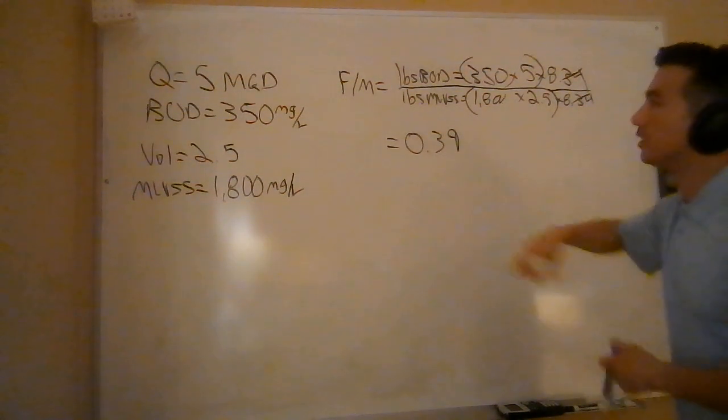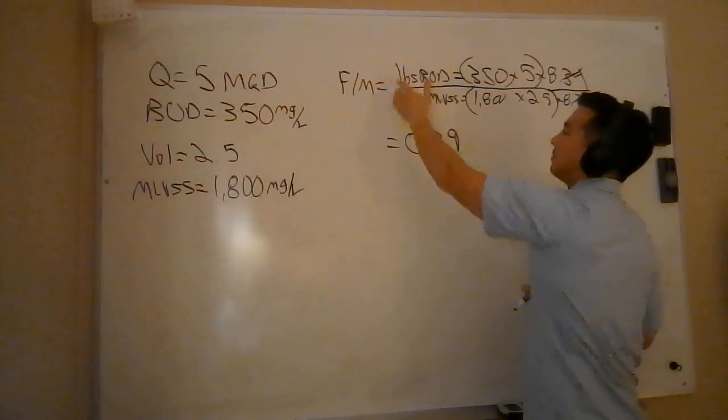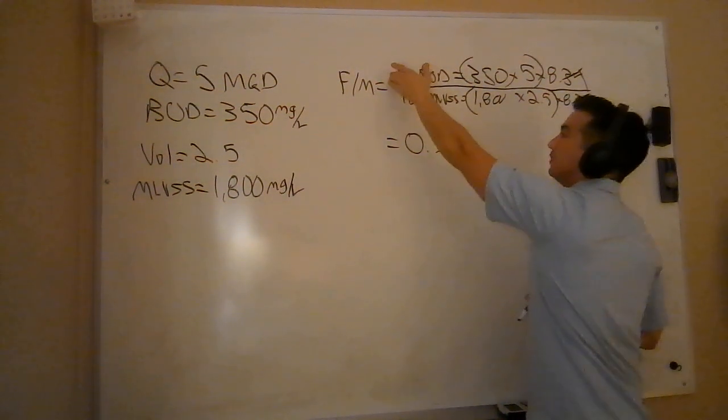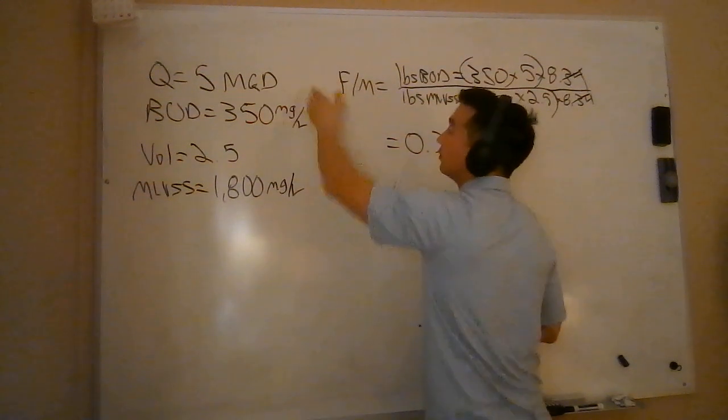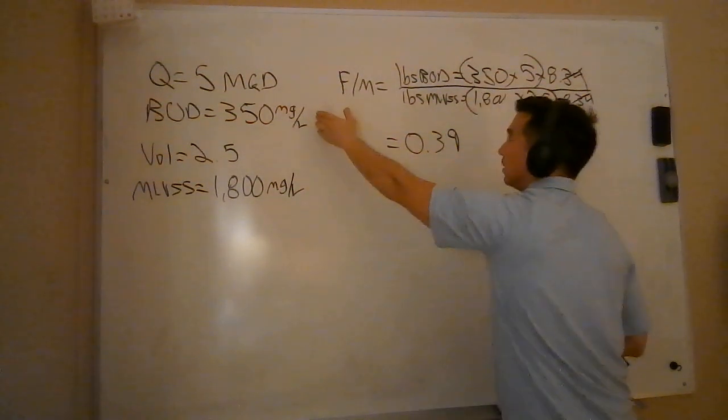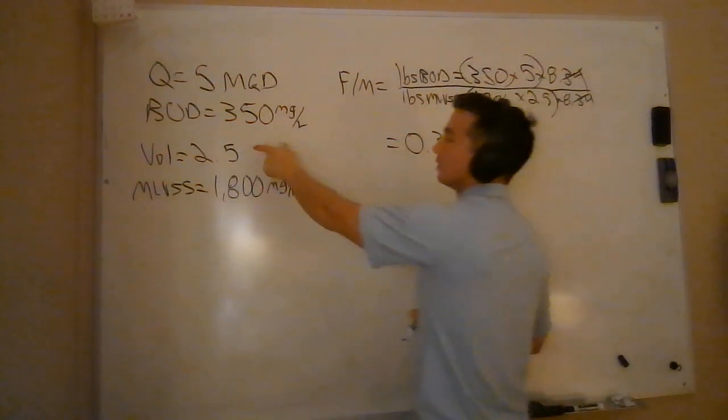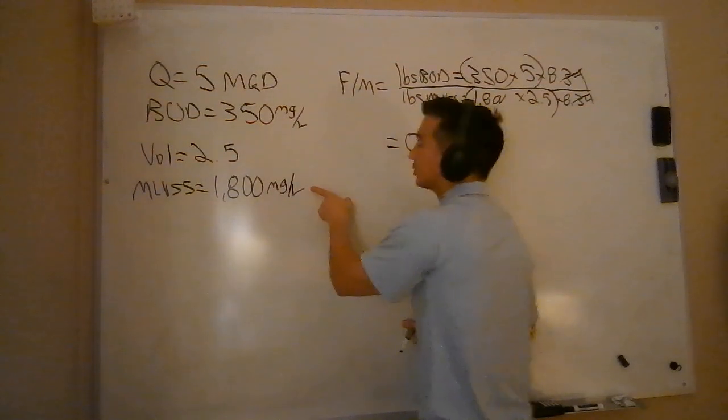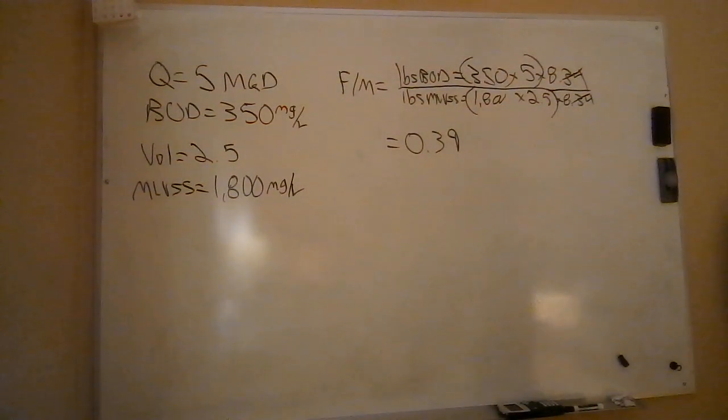So what do we do? Pounds of BOD divided by pounds of MLVSS. We care about the BOD associated with the flow through that part of the treatment plant. Where are the bugs located? They're located in our aeration tank, concentration of bugs. We run the pounds formula and voila.